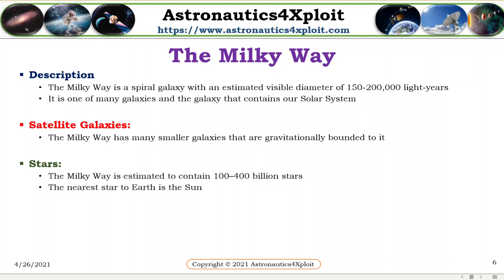The Milky Way is a spiral galaxy with an estimated visible diameter of 150,000 to 200,000 light years. It is one of many galaxies, and the galaxy that contains our solar system.